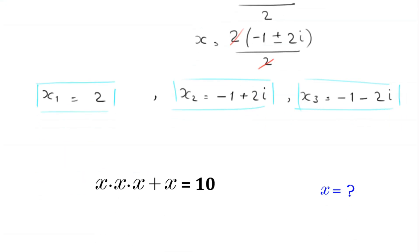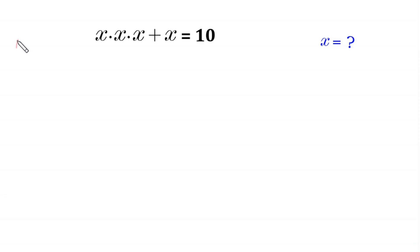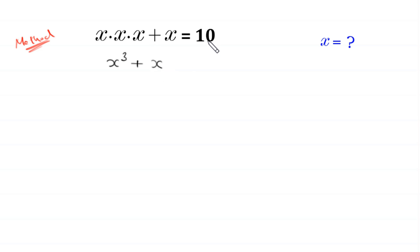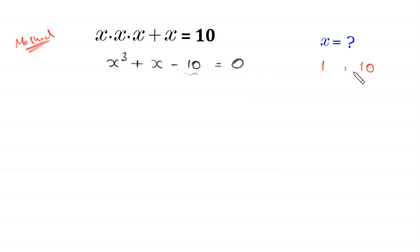Now, let us solve this equation by method 2. We use method 2 to solve this cubic equation. This x times x times x is equal to x cubed, plus this x, and move this 10 to the left side, it becomes negative 10 is equal to 0. Now, factors of this 10 are 1, 10, 2, and 5.